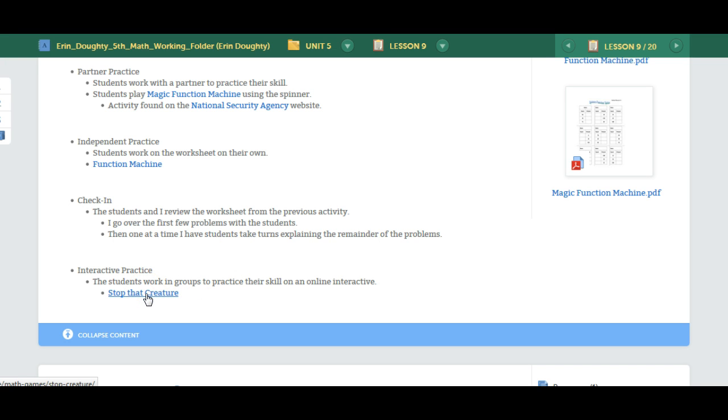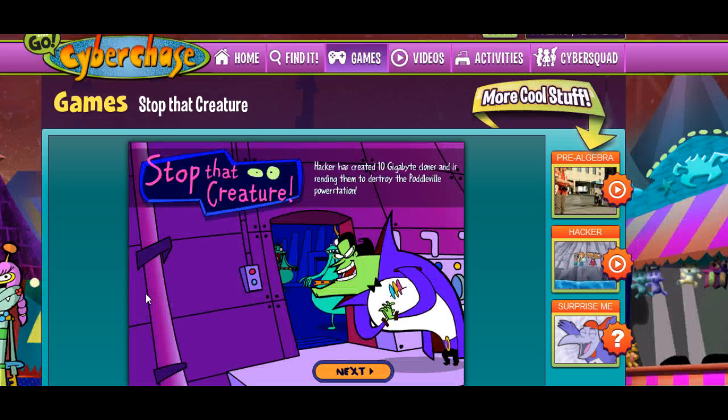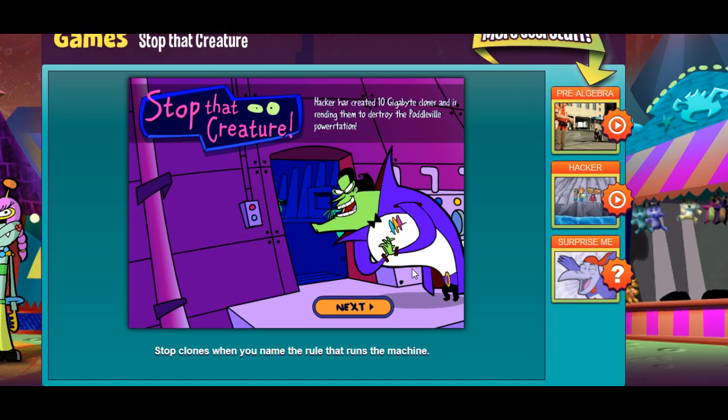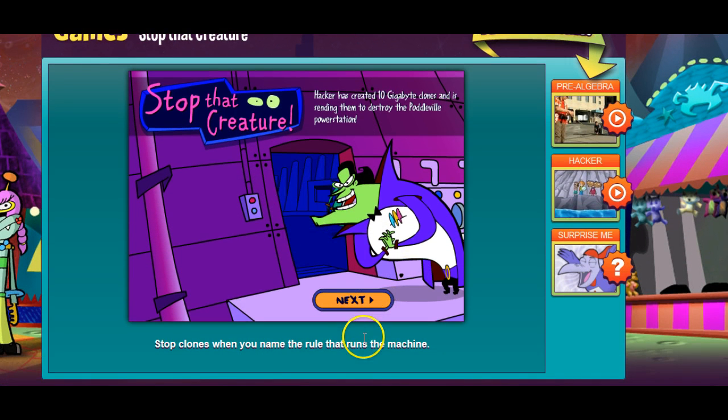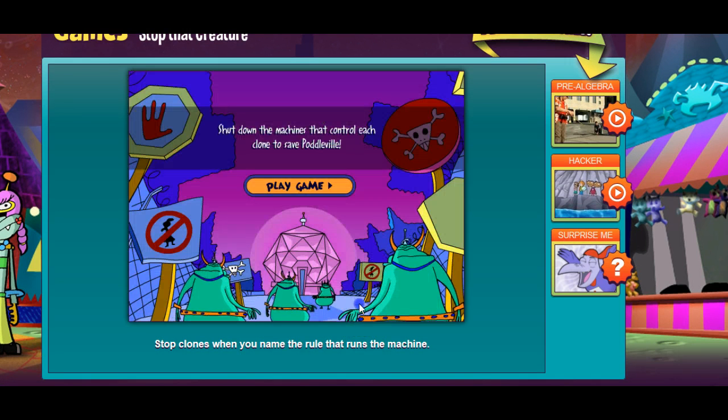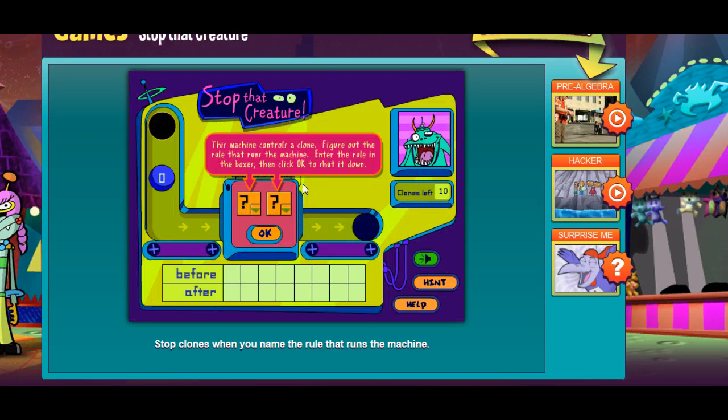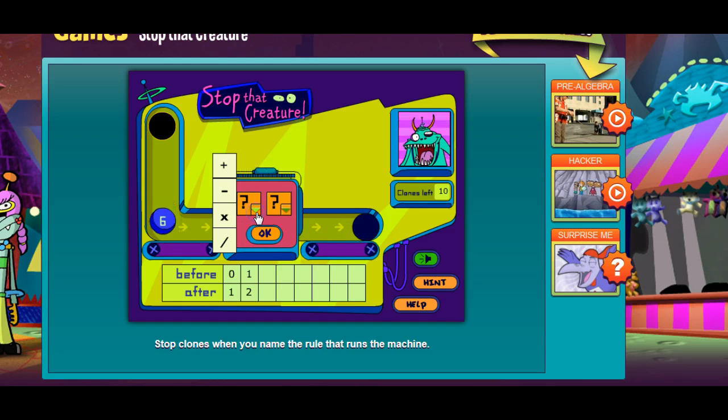And the last day is the interactive practice, a game called Stop That Creature. This is from PBS Kids. So the students have to, they actually watch the number go in and then out of the box and then they have to determine what the rule was. So they can change the operation and then the number to what it was used.